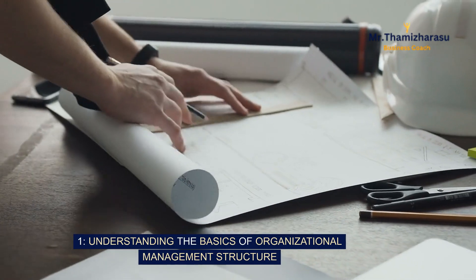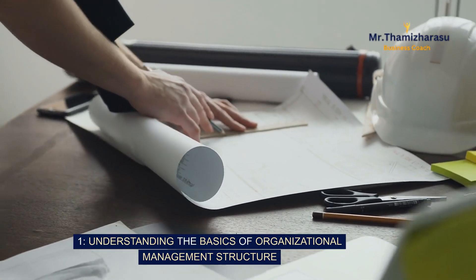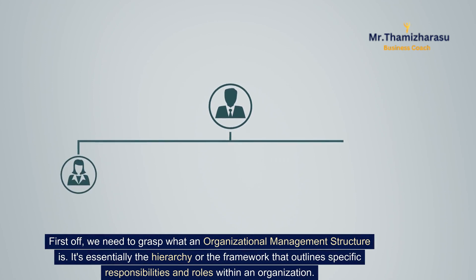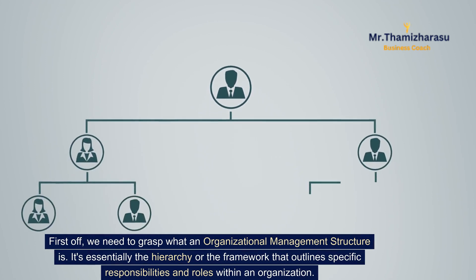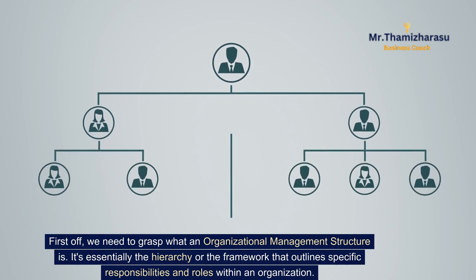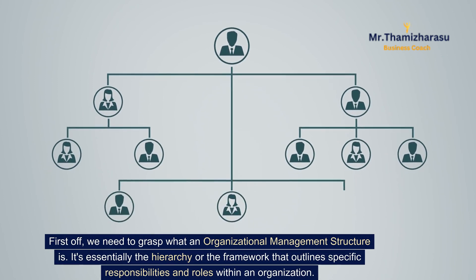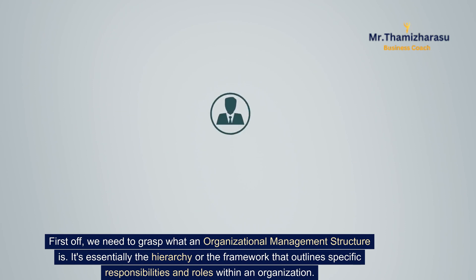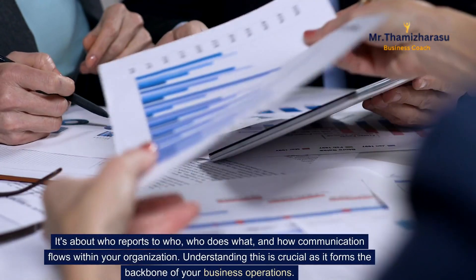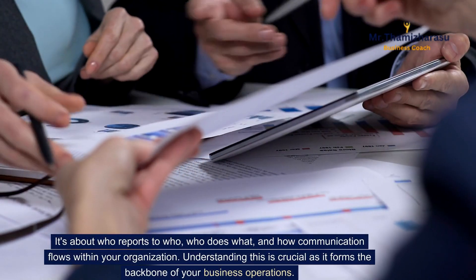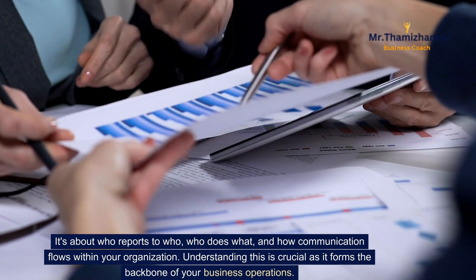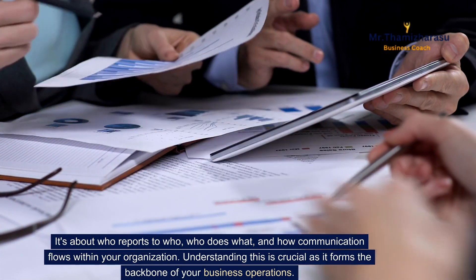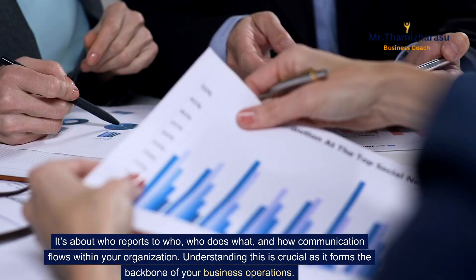Understanding the basics of organizational management structure. First off, we need to grasp what an organizational management structure is. It's essentially the hierarchy or the framework that outlines specific responsibilities and roles within an organization. It's about who reports to who, who does what, and how communication flows within your organization. Understanding this is crucial as it forms the backbone of your business operations.